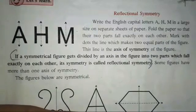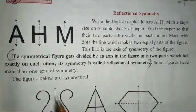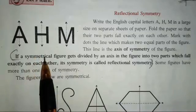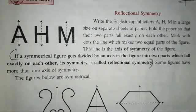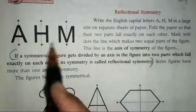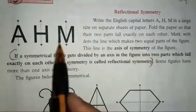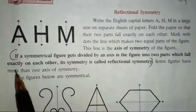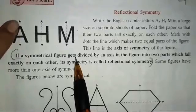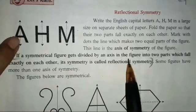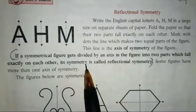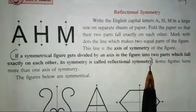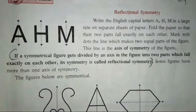This chapter is very easy to understand, children — we have done this last year also. We have a few figures in which we have to draw a symmetrical axis. This dotted line is known as the symmetrical axis. If a symmetrical figure gets divided by an axis into two parts which fall exactly on each other, its symmetry is called Reflectional Symmetry. This statement can be asked for your MCQ — it is there in your textbook, you all can revise it.